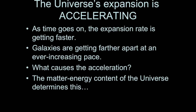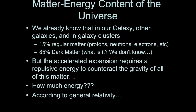Astronomers want to know what is causing the expansion rate to accelerate. Cosmologists know that what drives an accelerating or decelerating expansion is the matter-energy content of the universe. We already know that for galaxies and galaxy clusters, matter is about 15% regular matter — protons, neutrons, etc. — and 85% dark matter. But to produce the accelerated expansion we measure, there needs to be a repulsive portion of the matter-energy content of the universe.